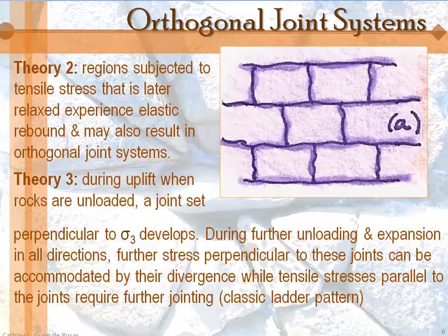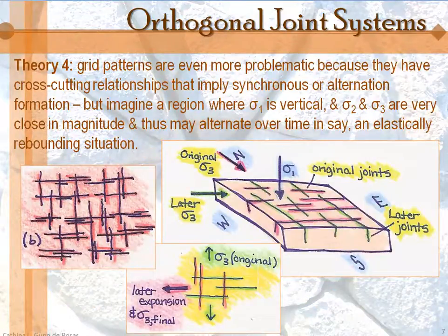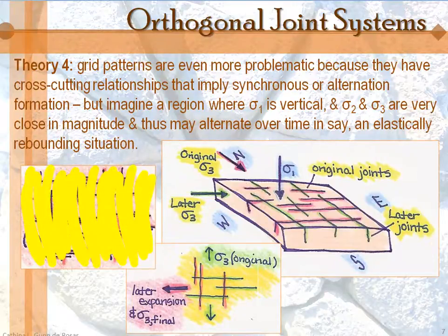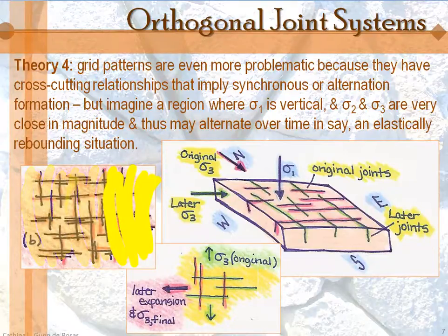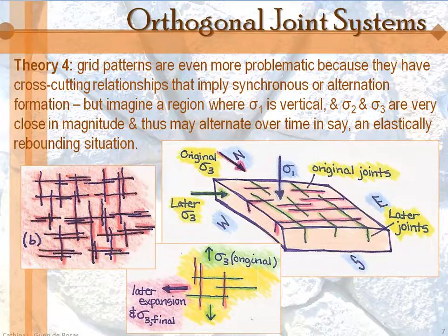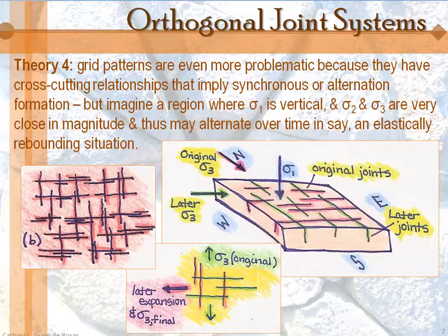We haven't yet talked about the grid pattern, which is even more perplexing to scientists in the field. Grid patterns have those cross-cutting relationships, so either they formed all at the same time, or they must have alternated. A propagating fracture or joint cannot cross a free surface — a joint coming up stops at the surface of the earth because all the stress is released. So joints should not be cross-cutting like this; they shouldn't be able to cross each other's surfaces.